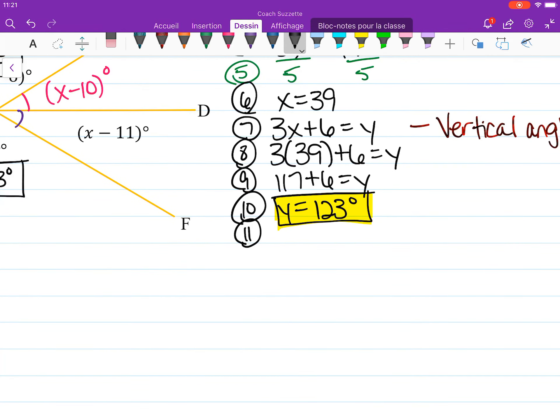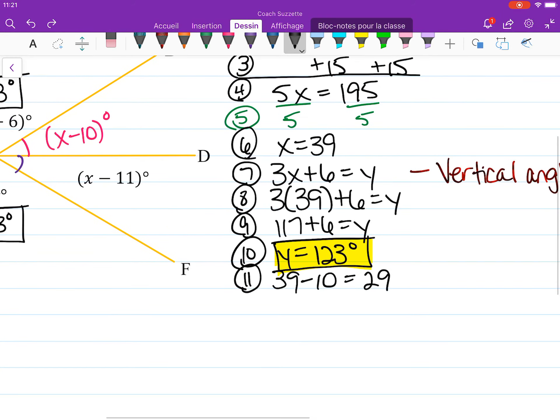So x minus 10, that means 39 minus 10, which is 29. So that means this is 29 degrees.